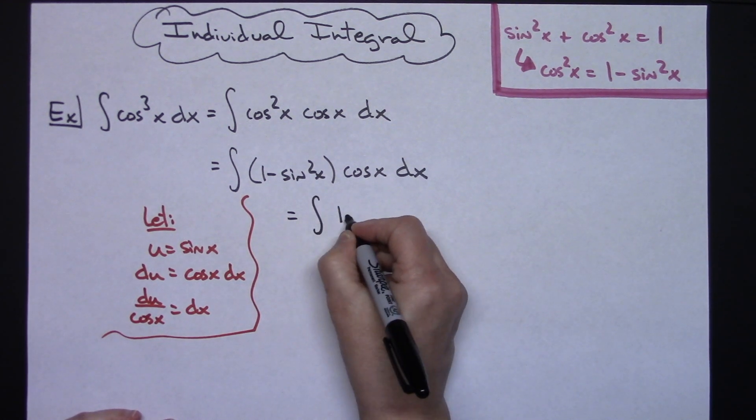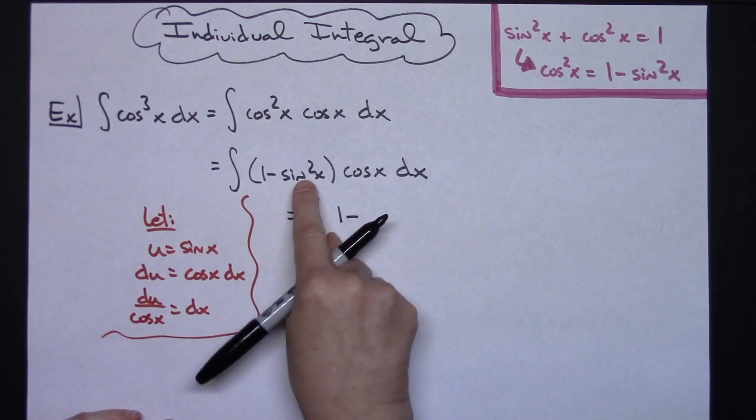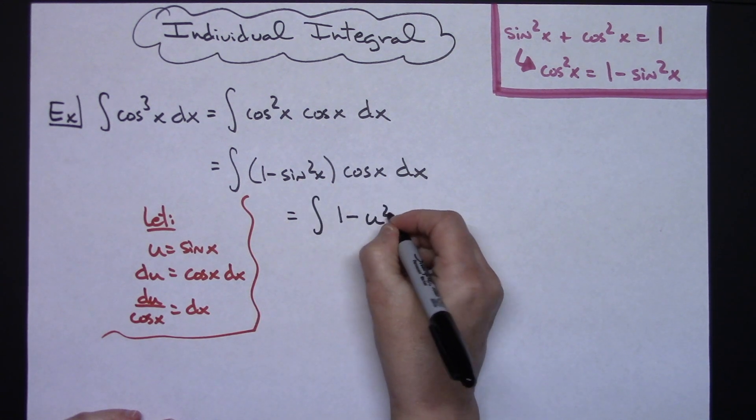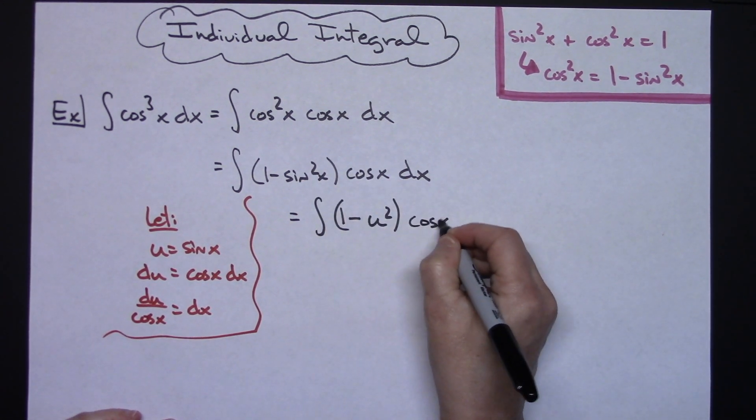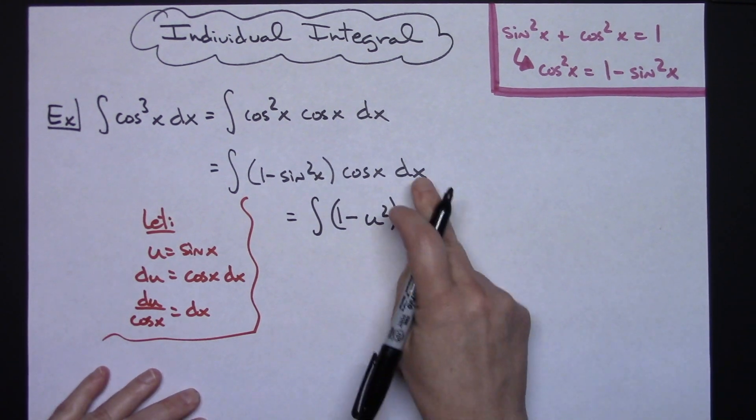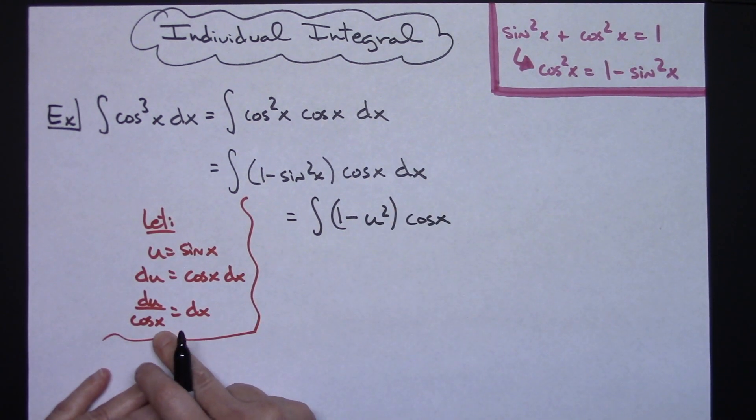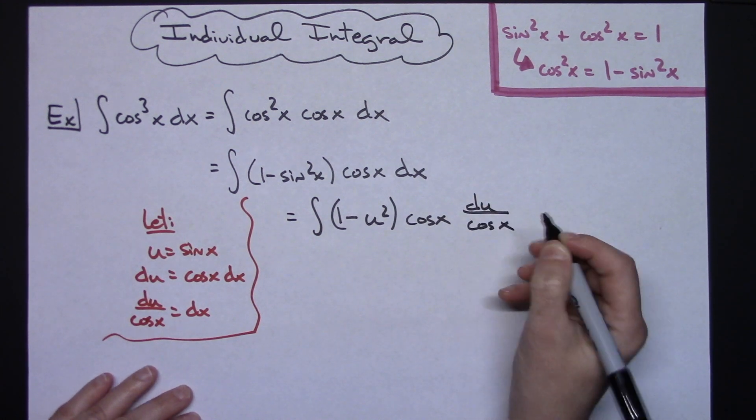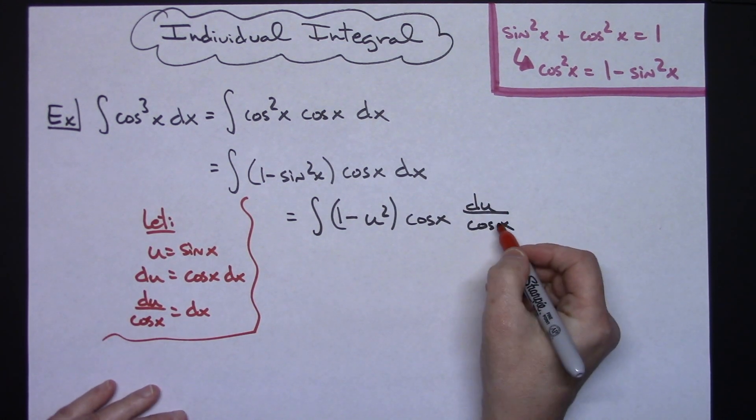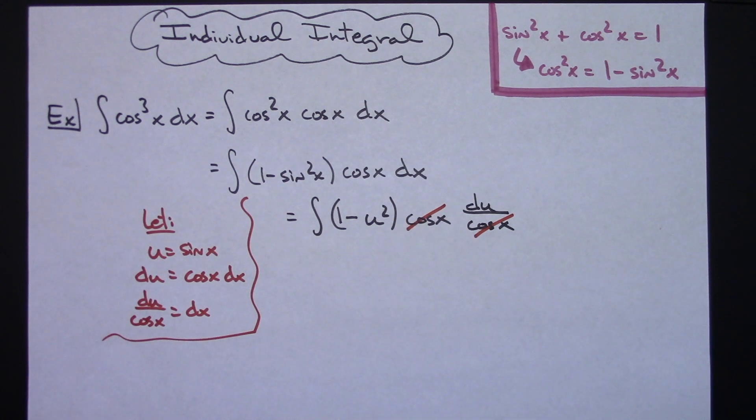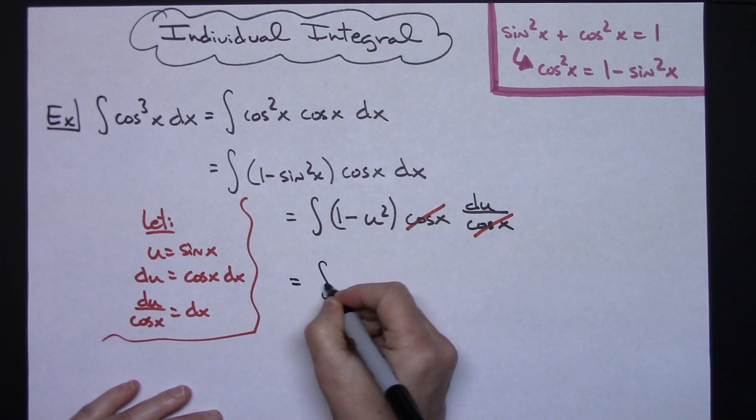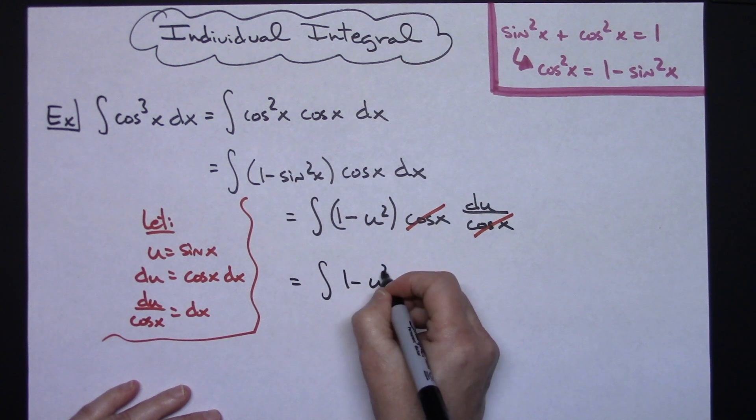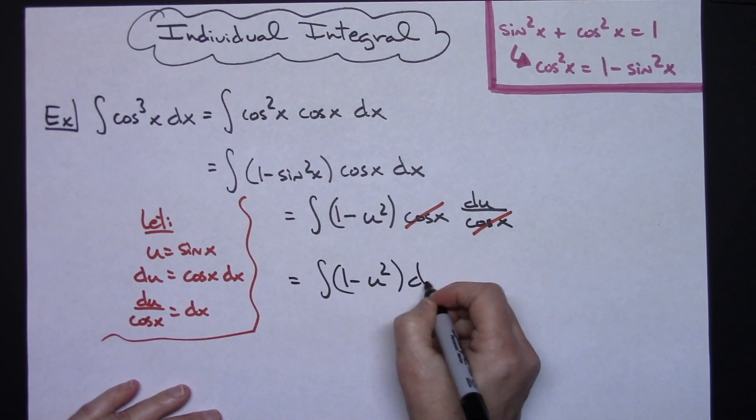We'll have the integral of 1 minus, since sine squared is u, I'll have a u squared. And then the cosine x will be there, and then replacing that dx with what I said it was going to be, we'll have a du over cosine x. That's going to nicely allow me to cross out those cosine x's and I'll be just left with the integral of 1 minus u squared du.